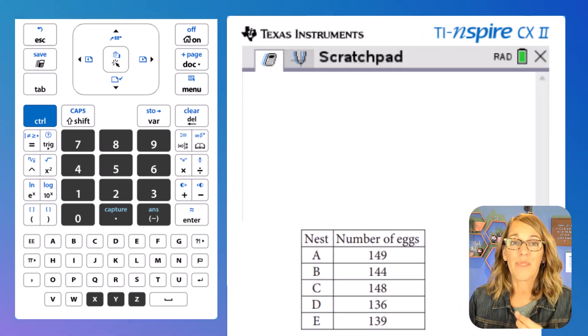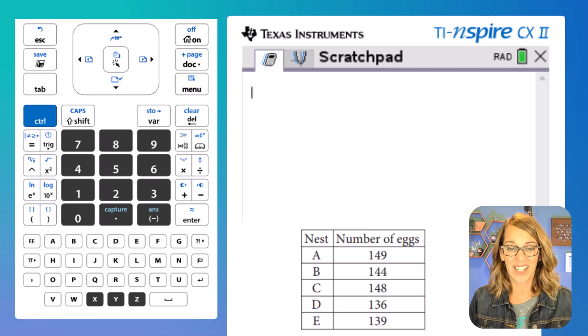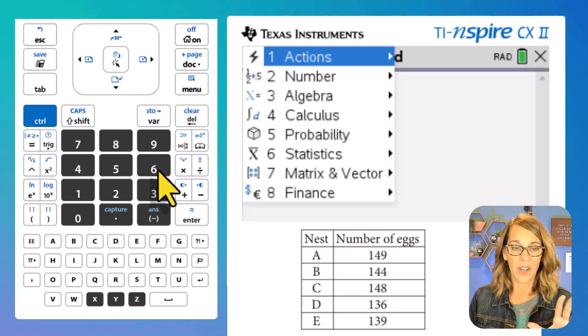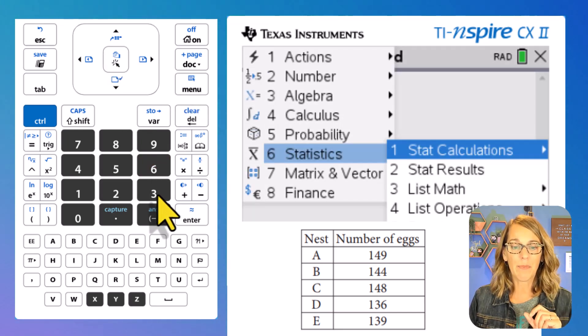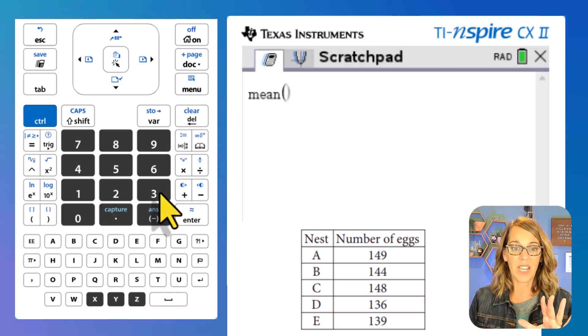What we just did is actually a really easy thing to do, but with the mean instead. So we're going to use a list. We're going to start with the mean. So we're going to go to menu. We want statistics, which I'm just going to hit number six here. We want list math. I'm just going to hit number three. And this time we want the mean, which is number three.